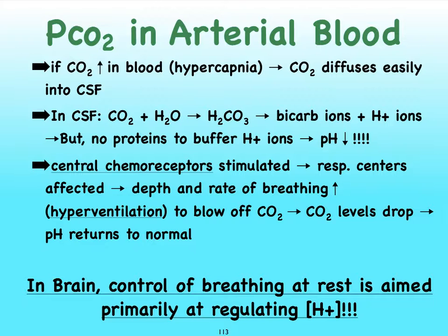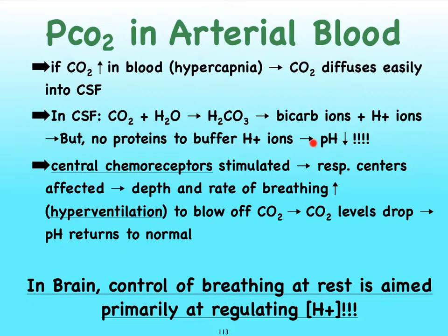Let's take a look at how we regulate our carbon dioxide levels. Suppose carbon dioxide levels are rising in our blood — we refer to that as hypercapnia. Carbon dioxide has a very easy time diffusing into our cerebrospinal fluid, which is rich in water, so the carbon dioxide will bind to the water to make carbonic acid, and that in turn can dissociate into bicarbonate ions and hydrogen ions. The problem in our CSF is that there aren't a whole lot of proteins for the hydrogen ions to bind to to buffer the pH, so we're going to see a drop in the pH after carbon dioxide levels have begun to rise in our blood.